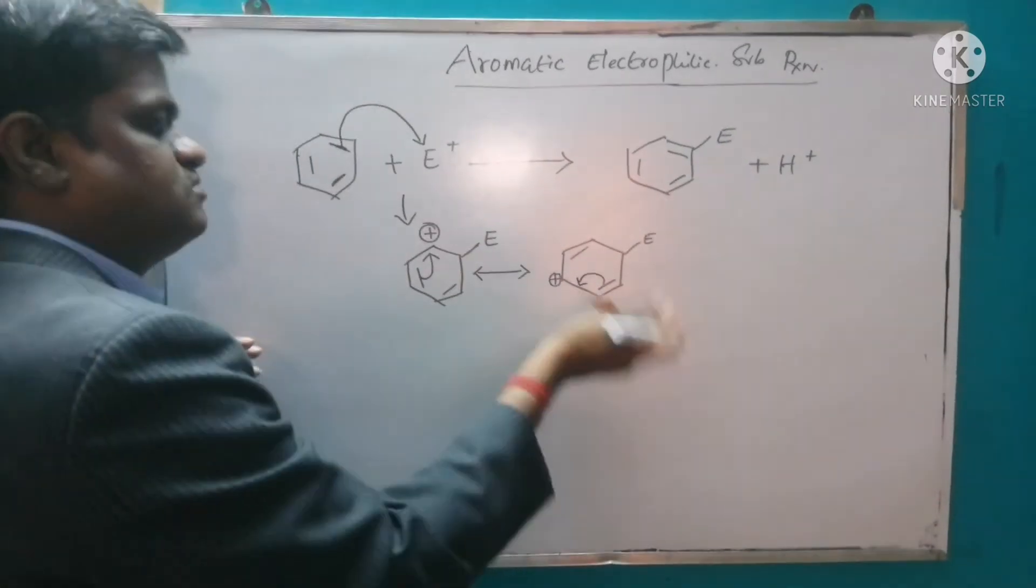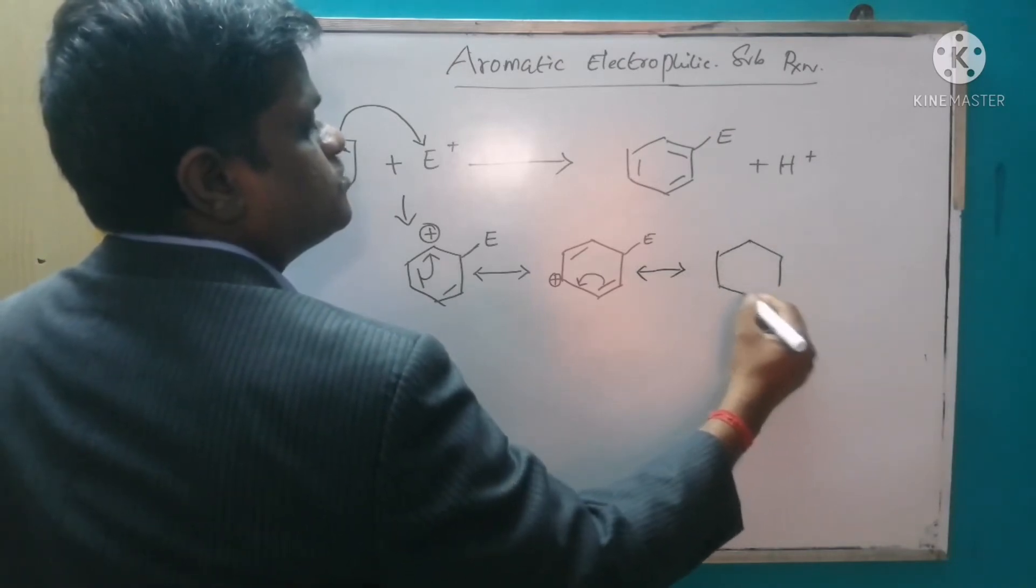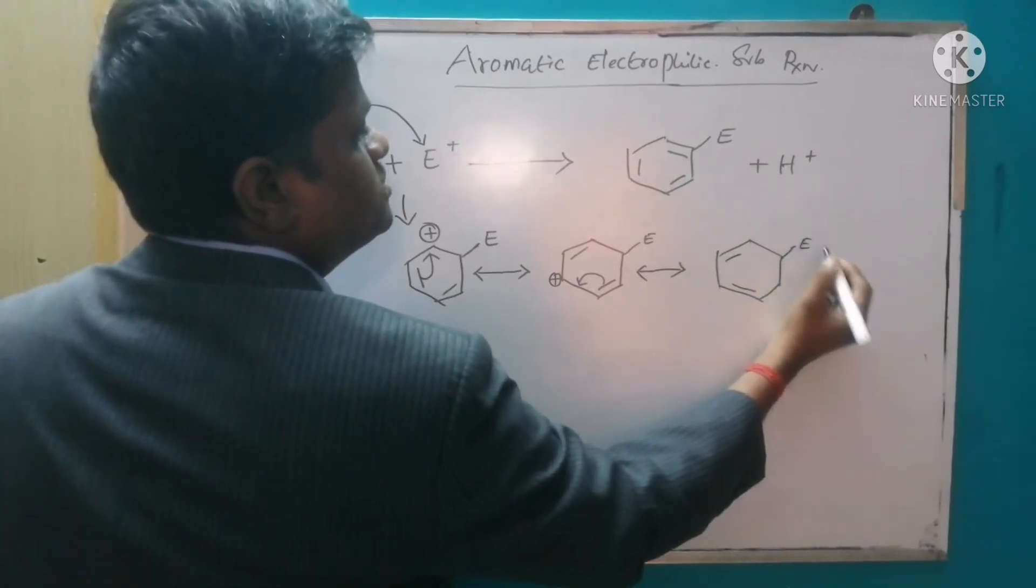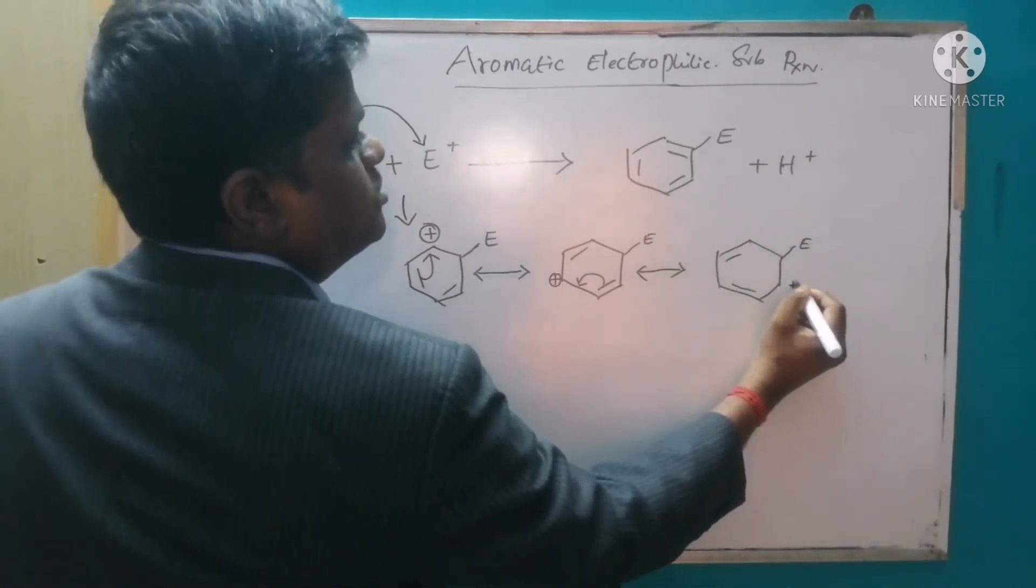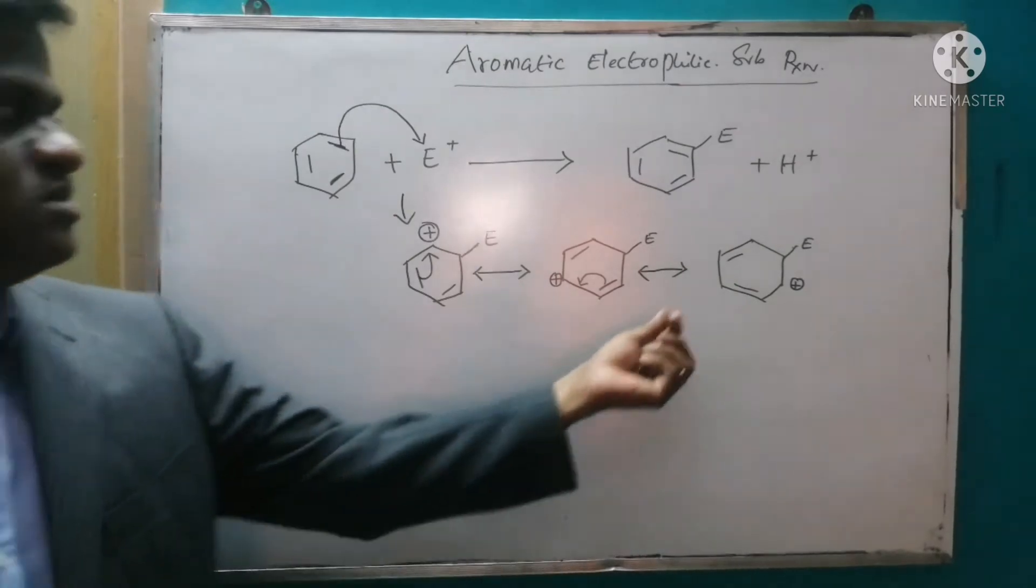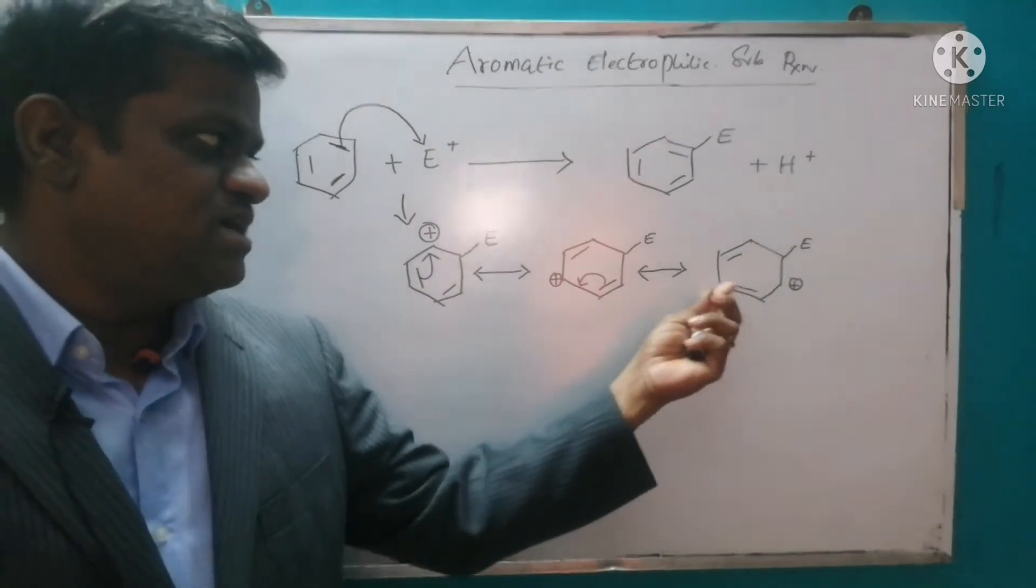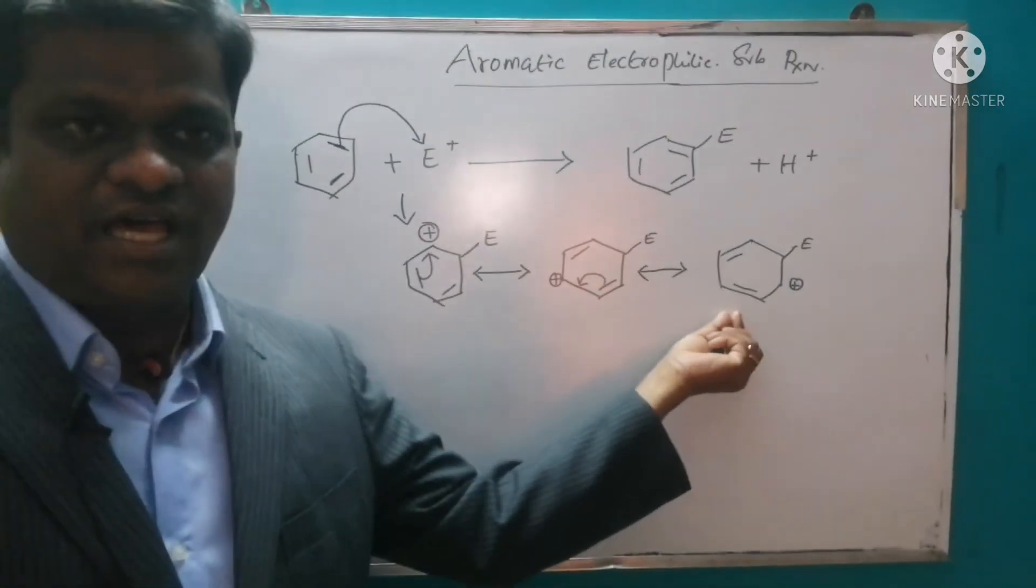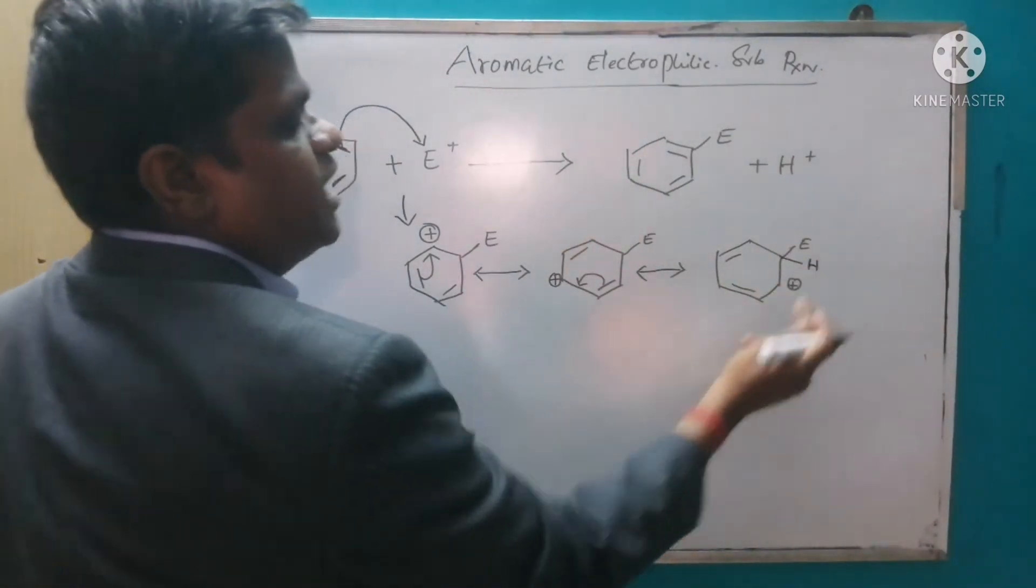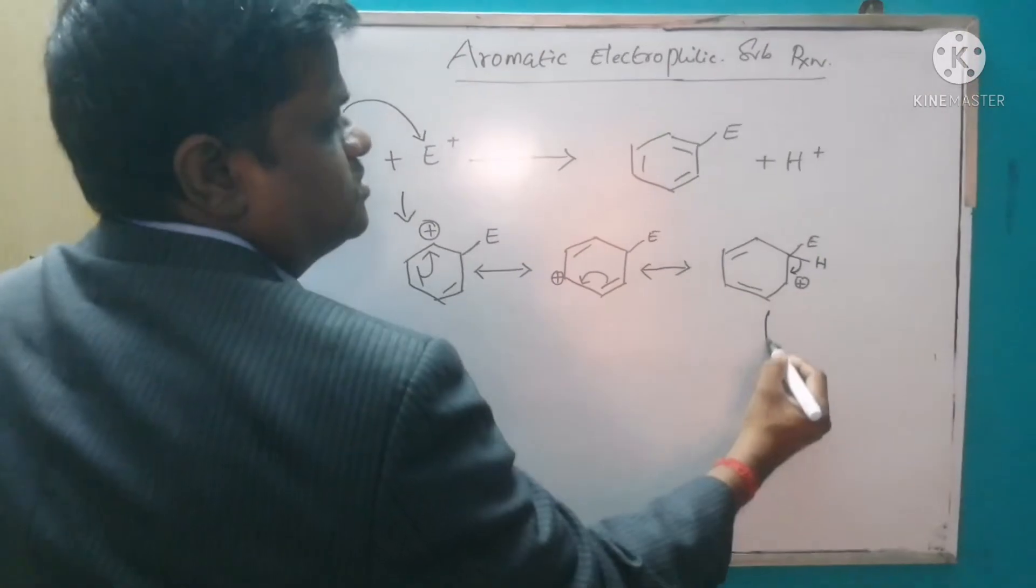And again you can write one more resonant structure. What happens like this. So this carbon lost the electron so it will get the charge. We know this benzene stability depends upon the six pi electrons, but it contains only four pi electrons, so this is highly unstable. So then what will happen, this hydrogen will lose its electron and it will stabilize.